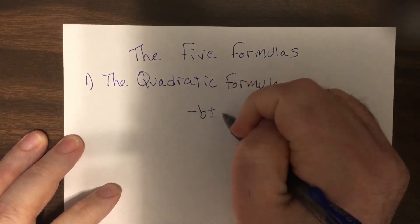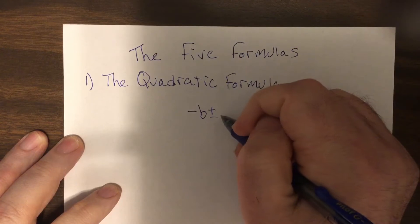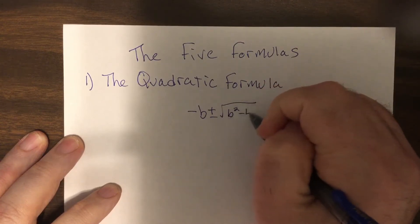You should have this. Let's memorize: negative b plus or minus the square root of b squared minus 4ac, all over 2a.